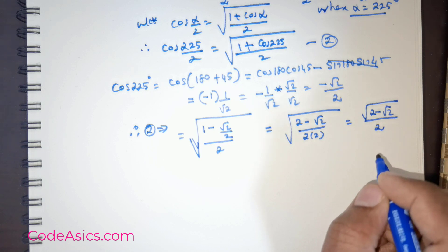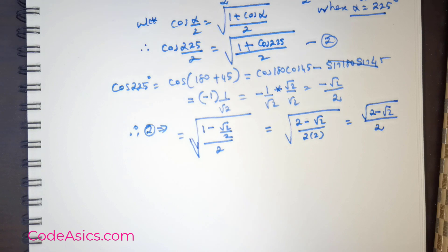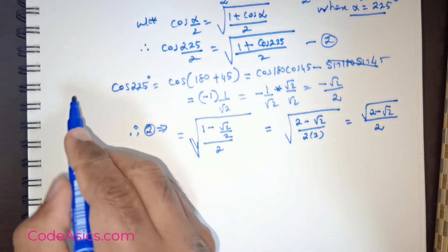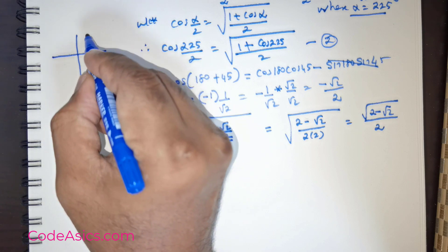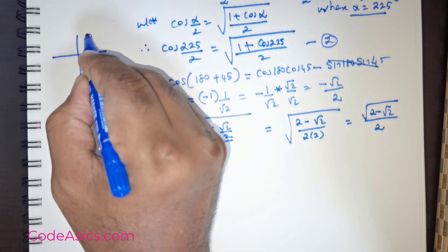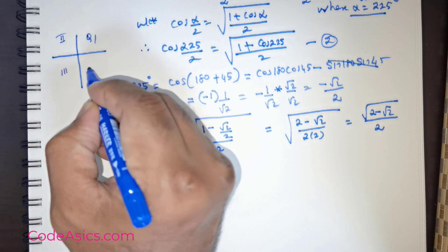There is one important thing that we need to know. You need to get hold of the sign. How are we going to handle that sign? If you were to draw the quadrants: first quadrant, second quadrant, third quadrant, and fourth quadrant.